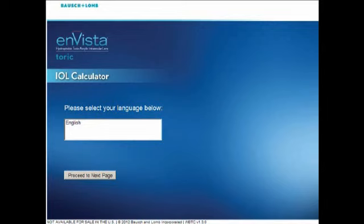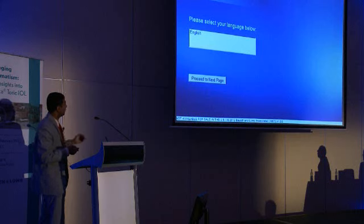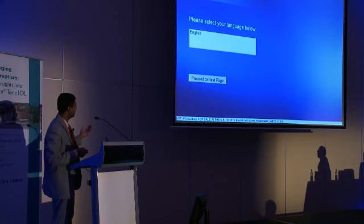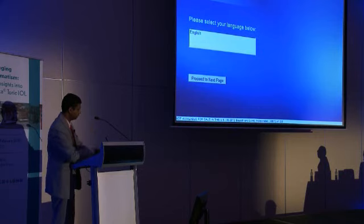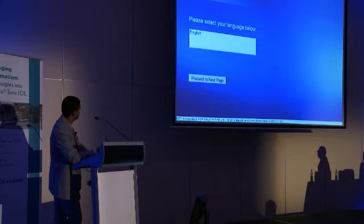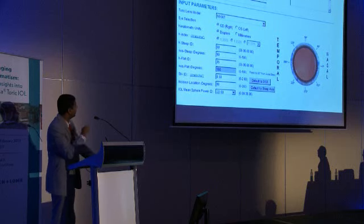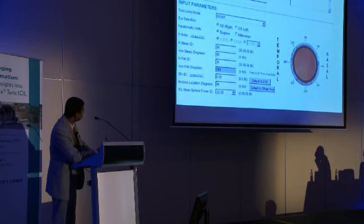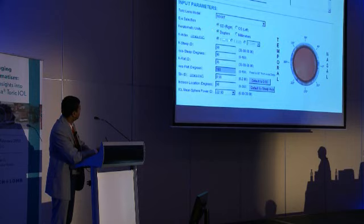Once you have decided that the patient is suitable for a toric intraocular lens and you have collected all the information, the next step is to use the software from whichever company lens you are going to use to calculate the power and the toricity of the lens you are planning to use. The Investor Toric has a nice online calculator. The first page lets you pick your language, then the next page asks for the surgeon's name, patient's name, date of birth, and any additional notes. You can then select your toric lens, the laterality of the eye, and enter your keratometry readings in either diopters or millimeters.